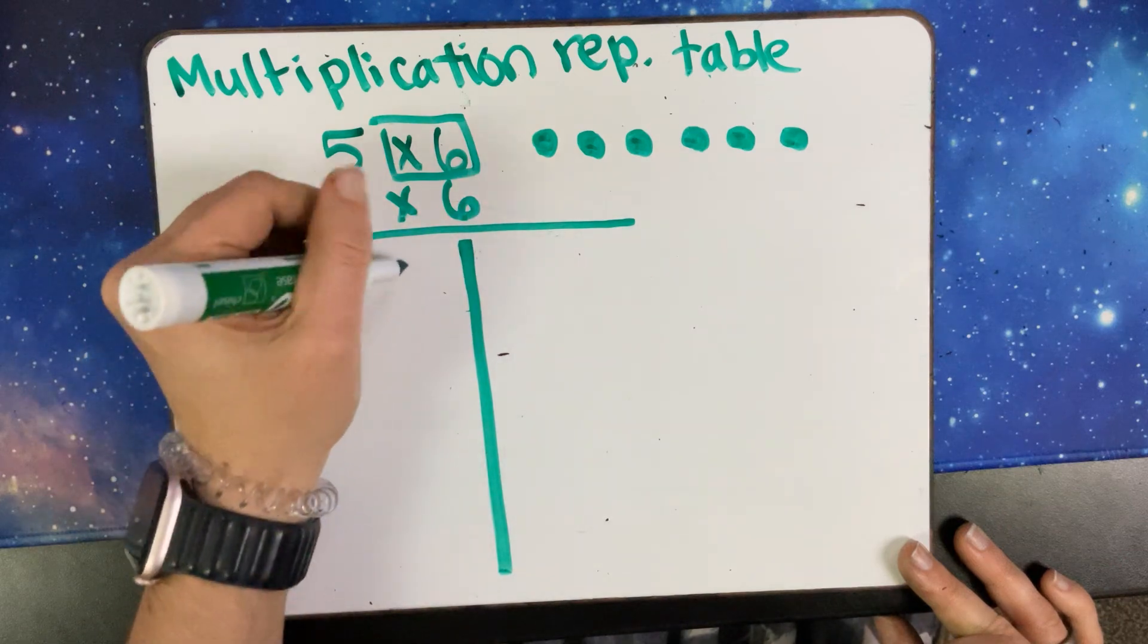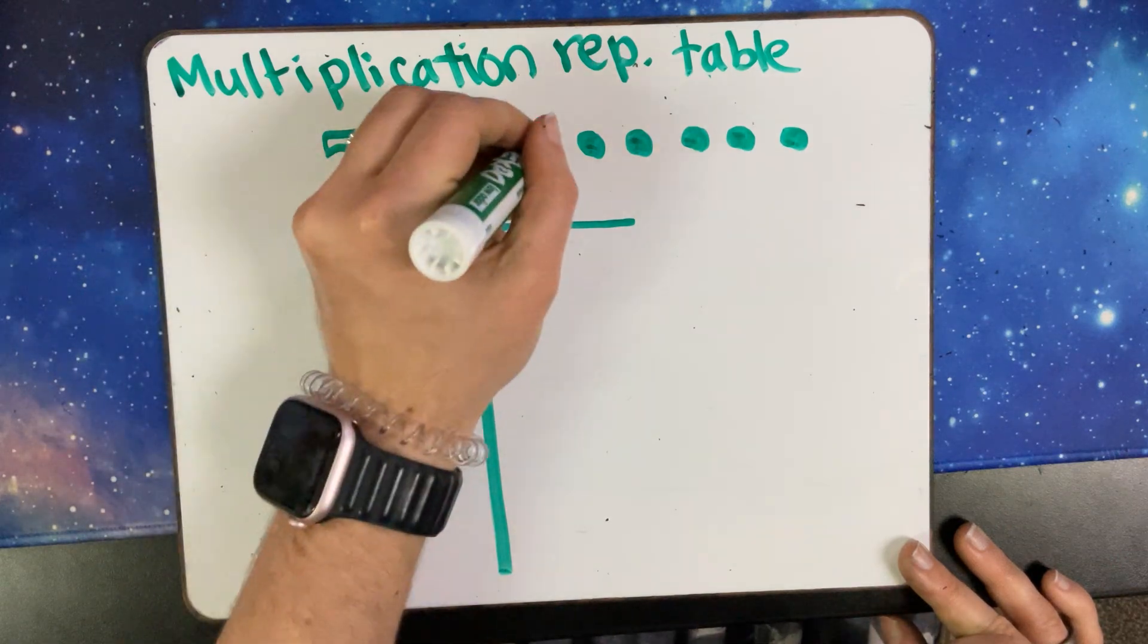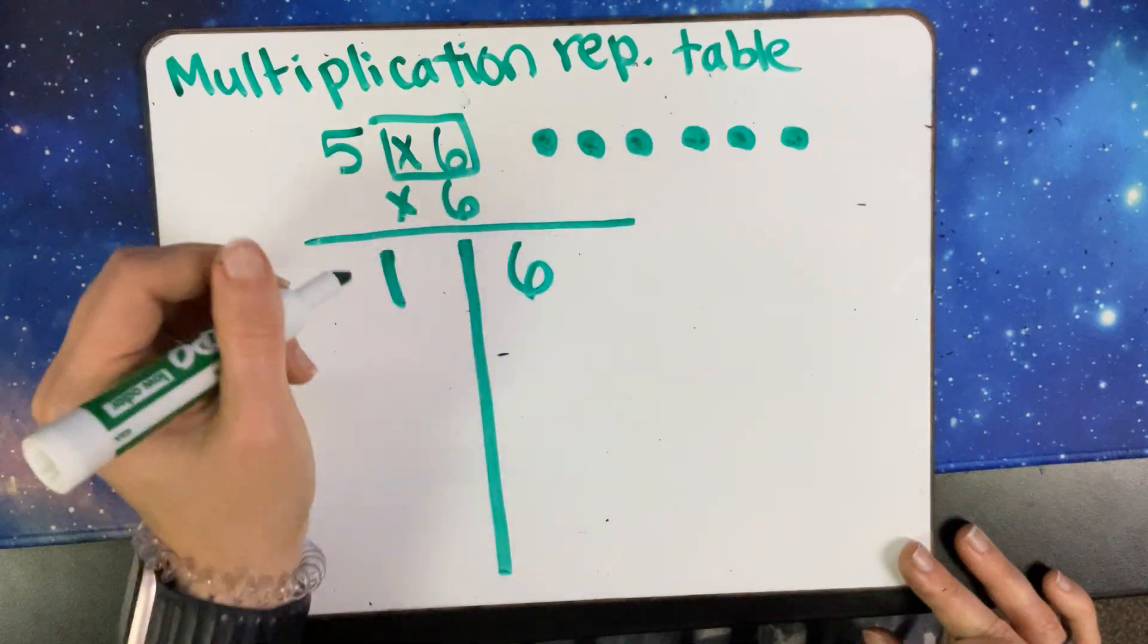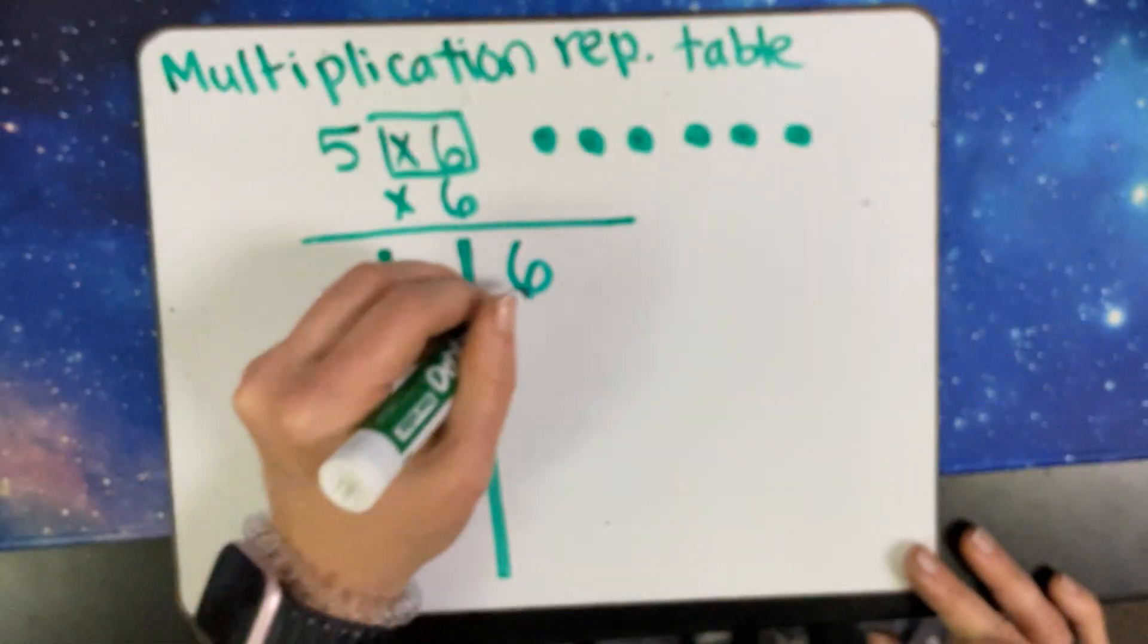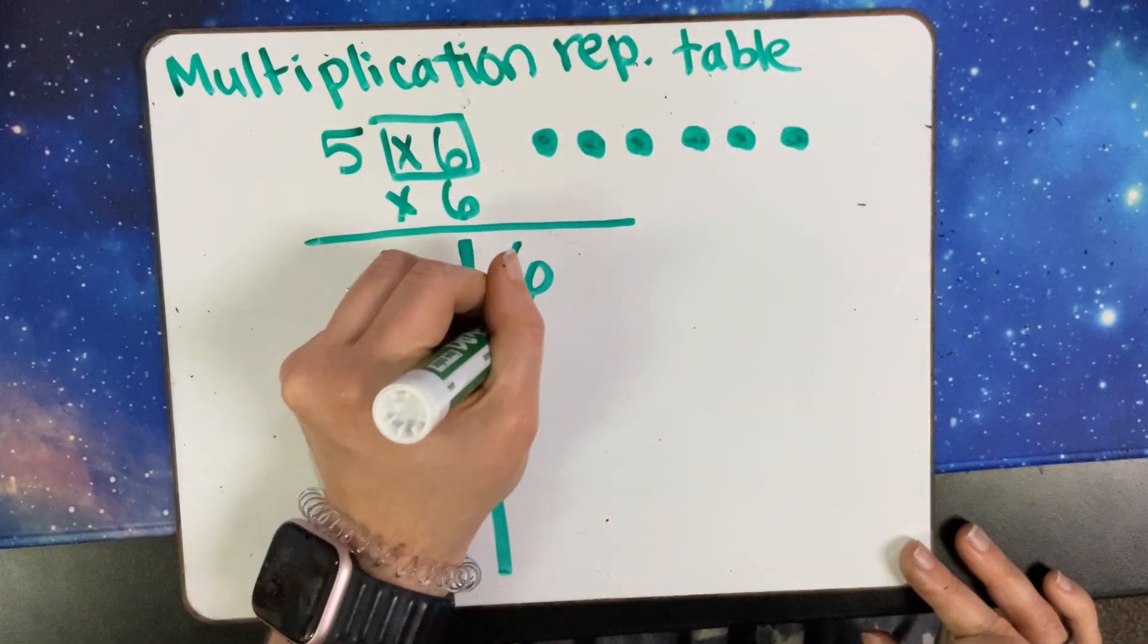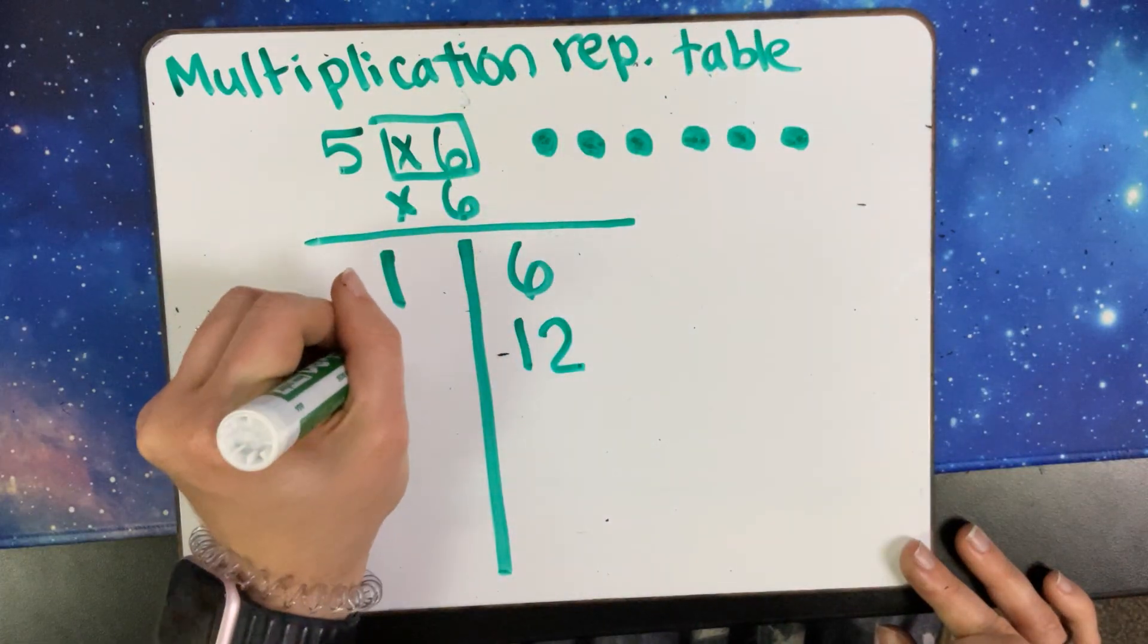For one group of six, I would count one, two, three, four, five, six, and write it down. Then I would keep counting, so I'd start at six, seven, eight, nine, ten, eleven, twelve. I'd put twelve under it, and I'd put two.